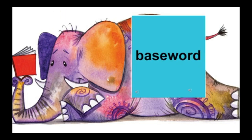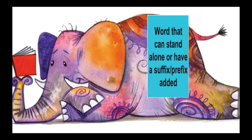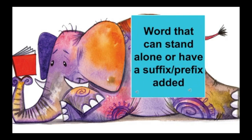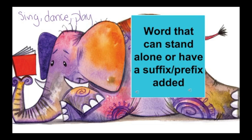Next, let's go over what a base word is. A base word is a word that can stand alone or have a suffix or prefix added to it. Some examples of base words could be words like sing, dance, play. Each of these words can stand by themselves, but you could also create a word like singing or replay.